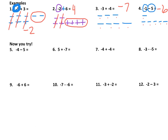Let's look at a couple more examples. In this problem, we have negative 4 and we have negative 5. Nothing cancels, so I'm going to count up what we have — 1, 2, 3, 4, 5, 6, 7, 8, 9. So the answer is negative 9.